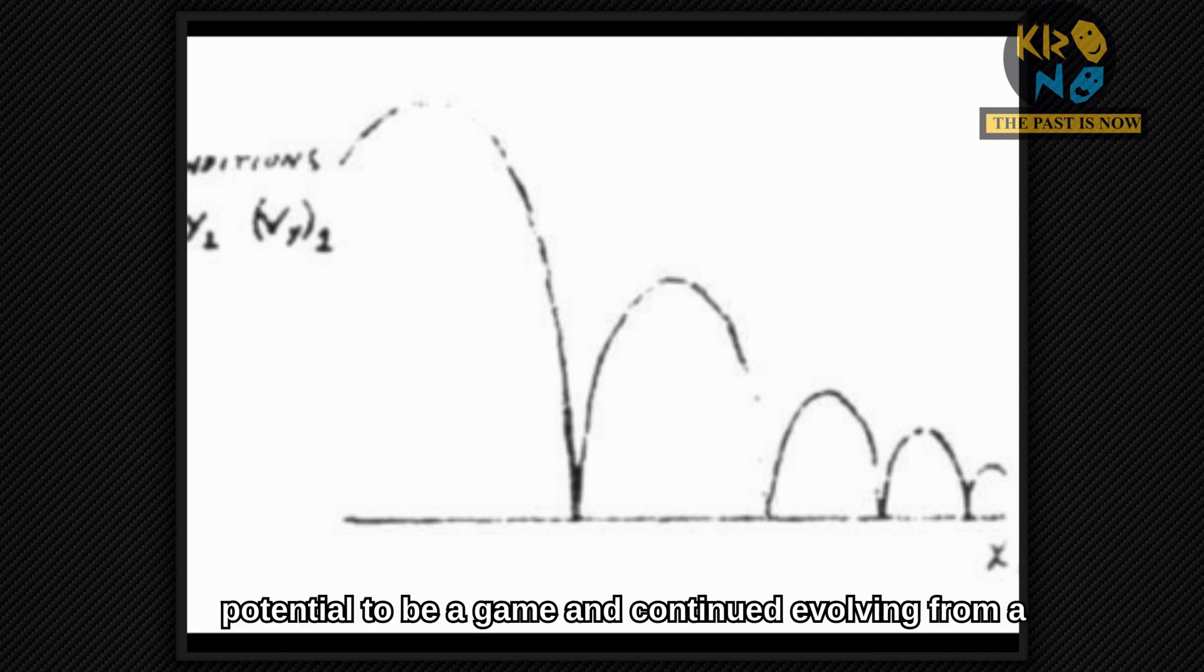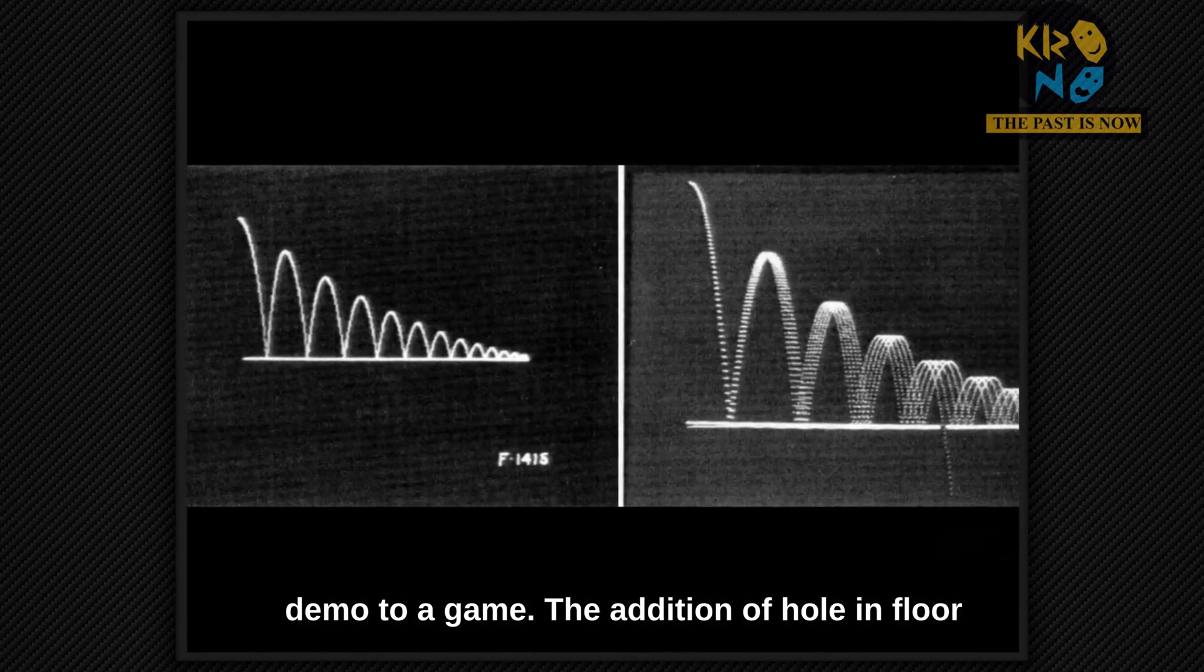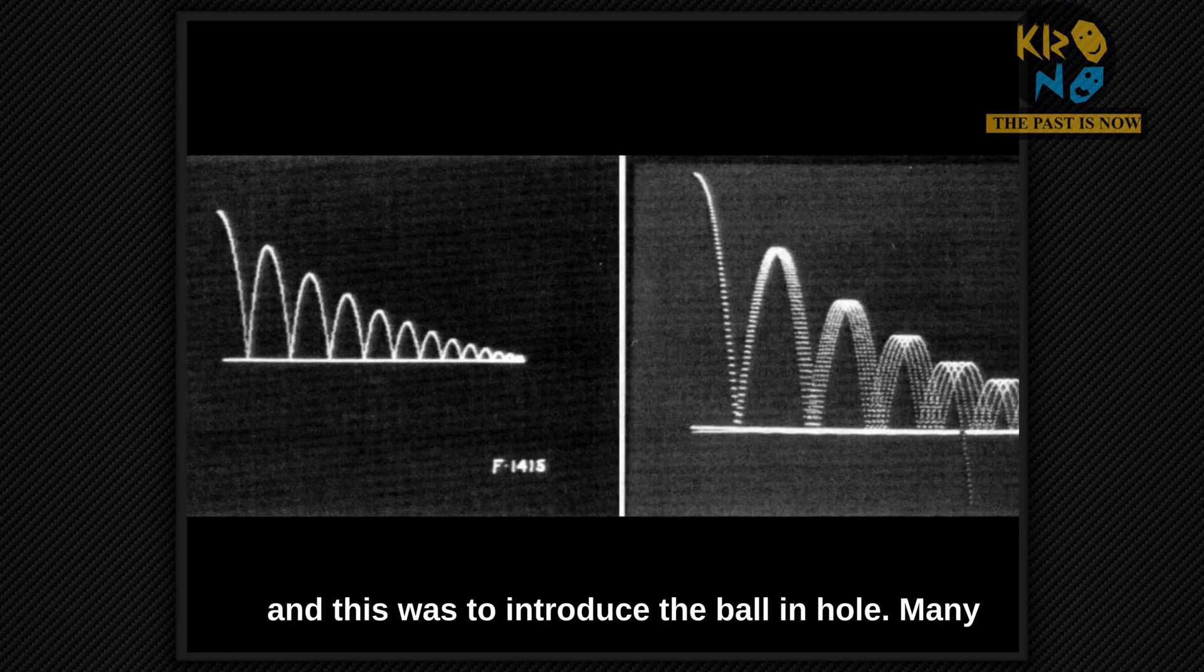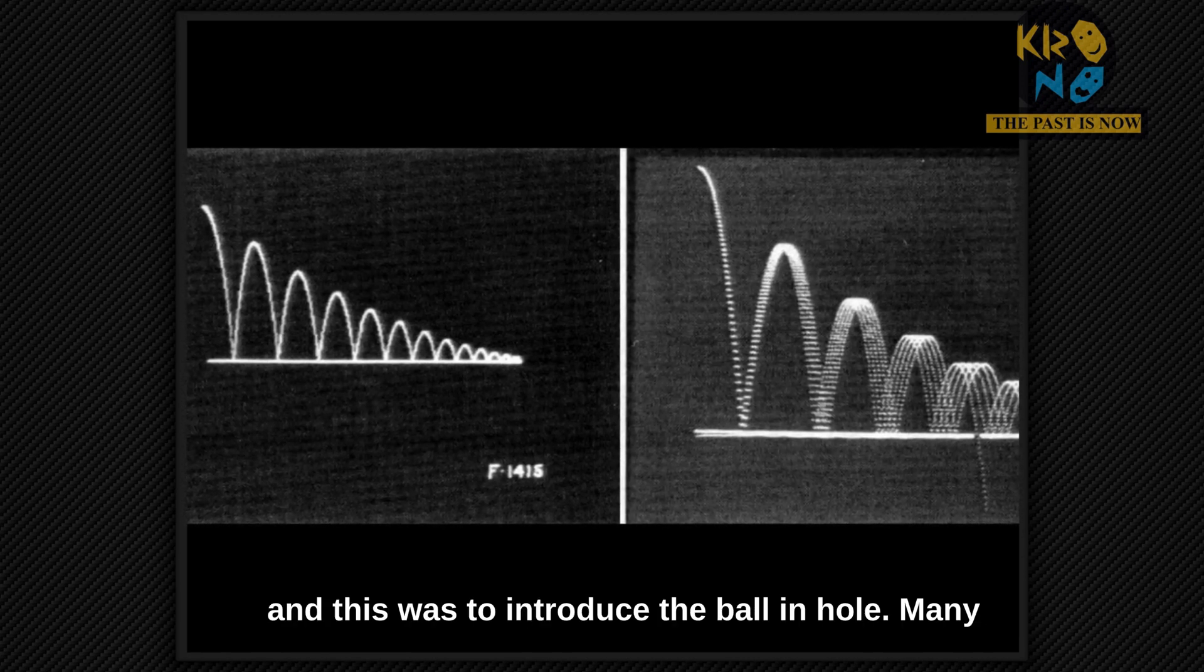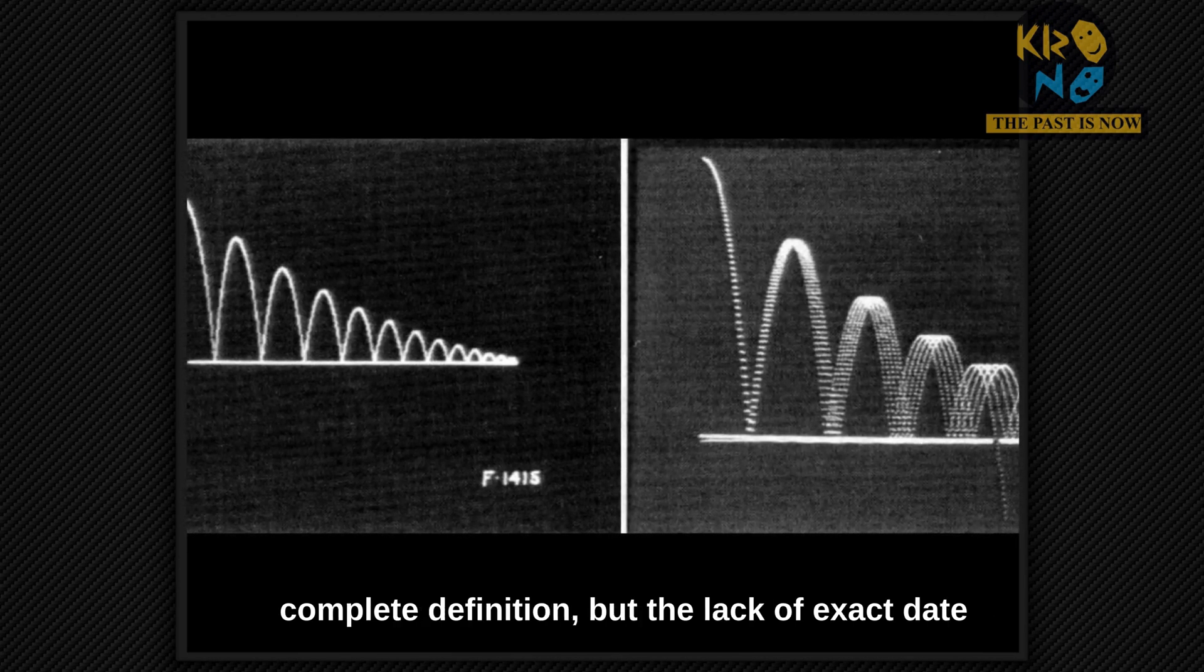However, it has potential to be a game and continued evolving from a demo to a game. The addition of a hole in the floor of the computer screen gives the user an objective, and this was to introduce the ball in the hole. Many people believe that this is the first video game by complete definition, but the lack of an exact date for this modification makes this difficult to prove.